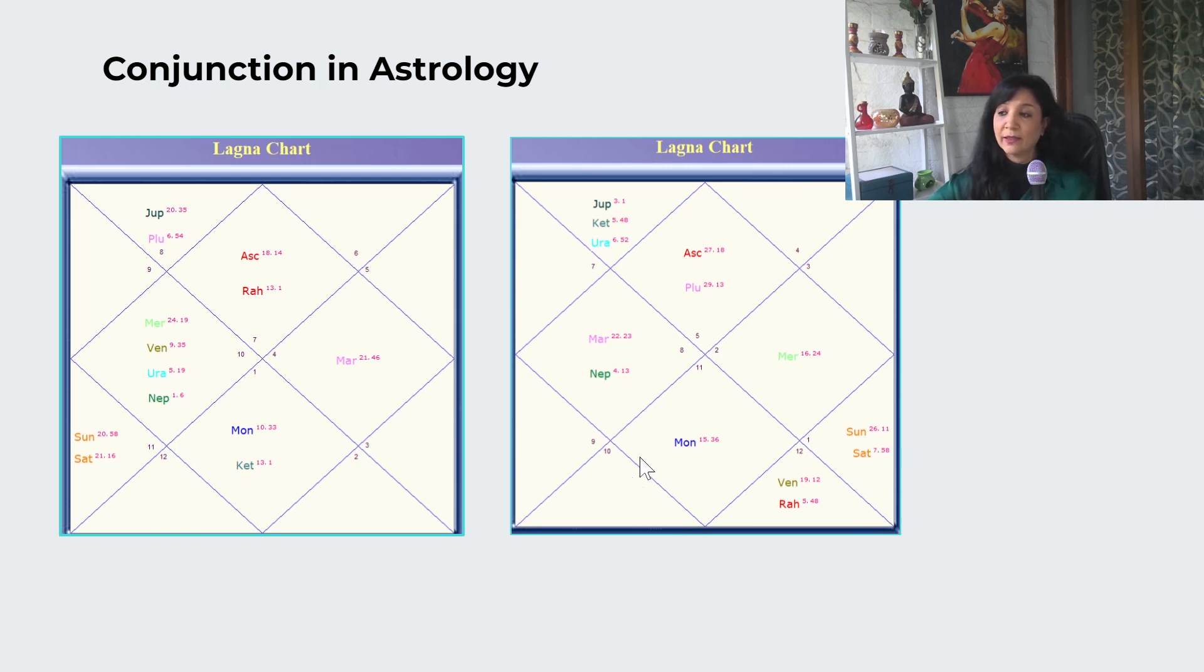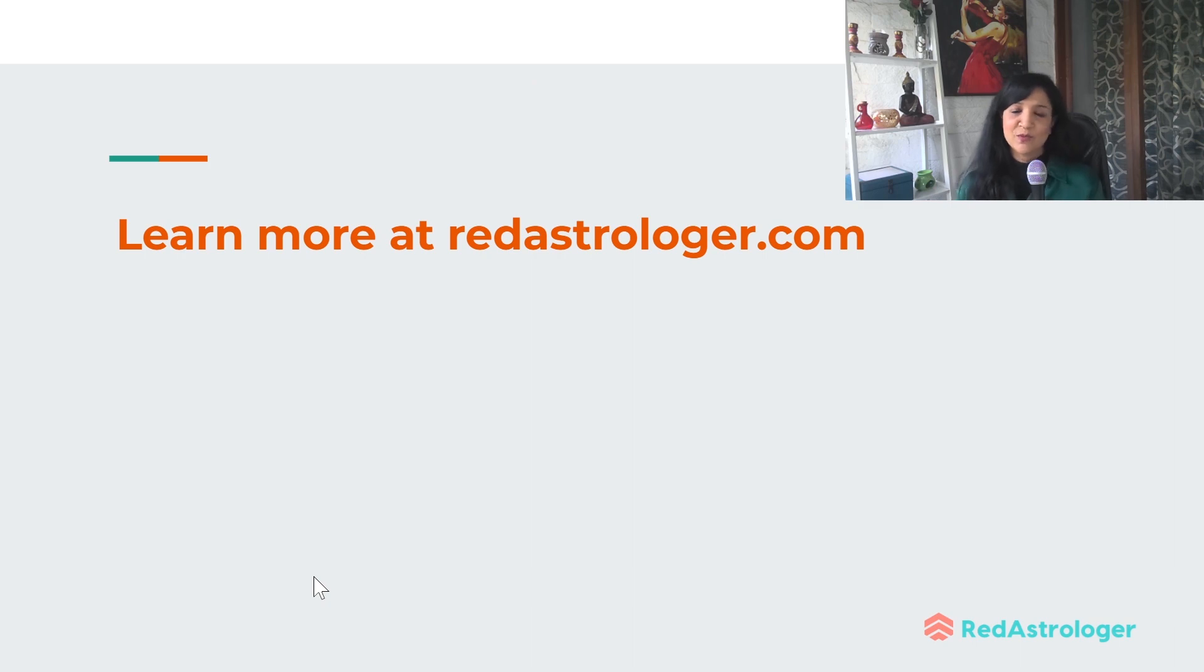The most important point in conjunction is that if the less degree planet has lordship of second, fifth, or eleventh house, then it really helps. But if the less degree planet has lordship of eighth, twelfth, or sixth house, like in the first chart where the less degree planet had lordship of sixth, then the influence was problems and disappointments. This way I have explained conjunction in Vedic astrology.